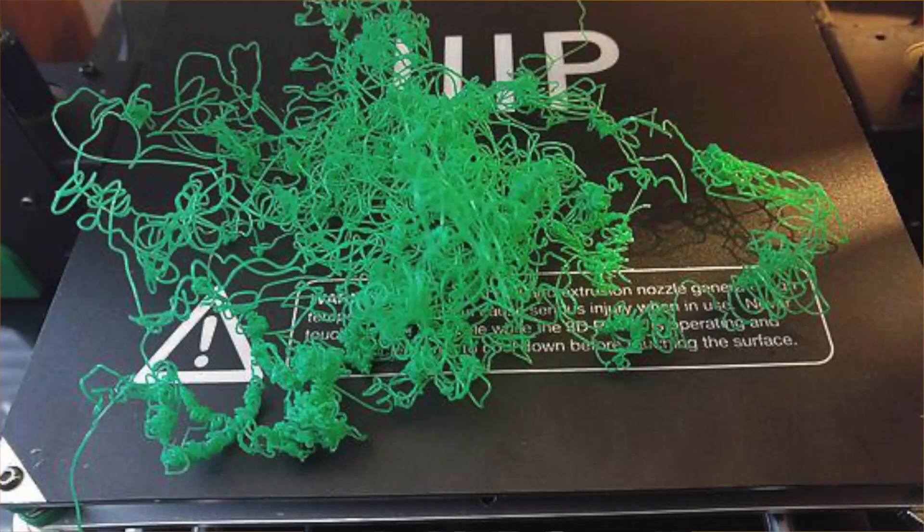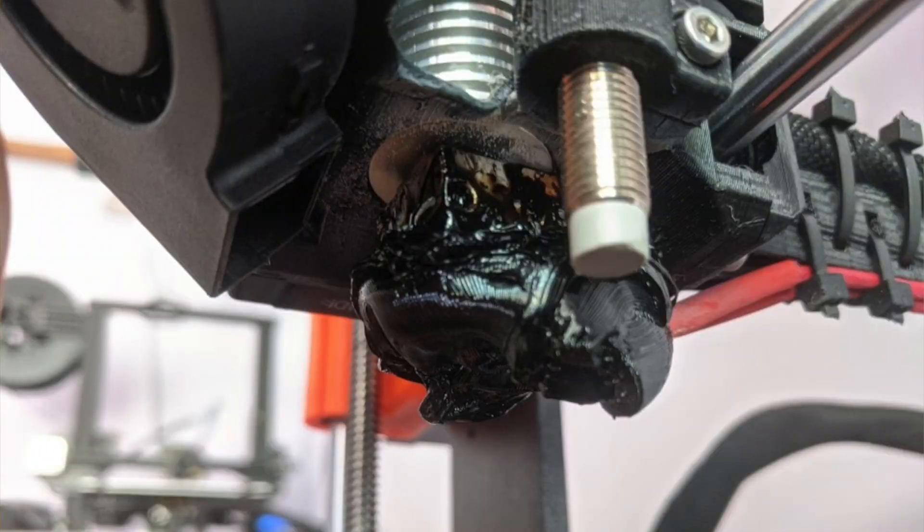Another failure that usually accompanies nozzle blobs is plain old spaghetti. Sometimes you'll get some spaghetti floating around on the build plate that eventually attaches itself to the nozzle and then forms a nozzle blob from there. So, you'll usually see spaghetti and nozzle blob in the same print.